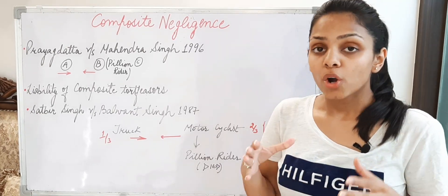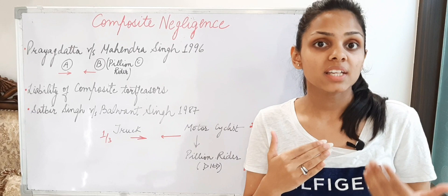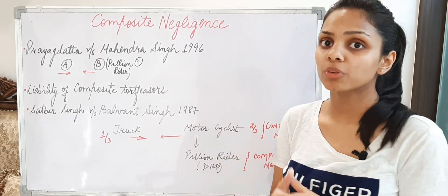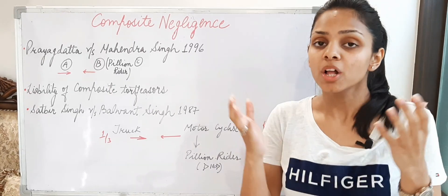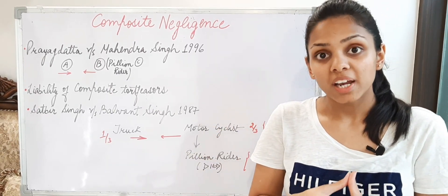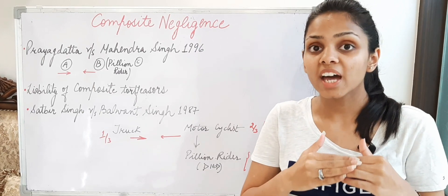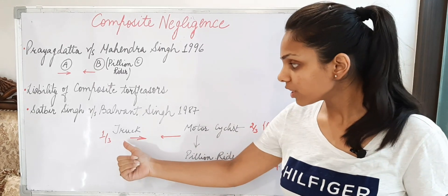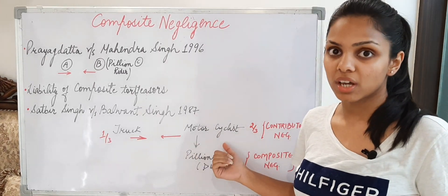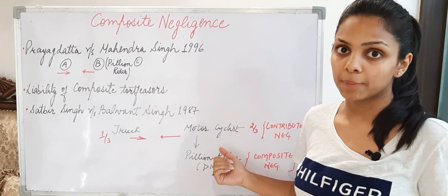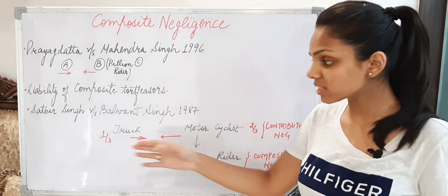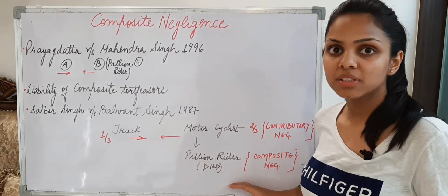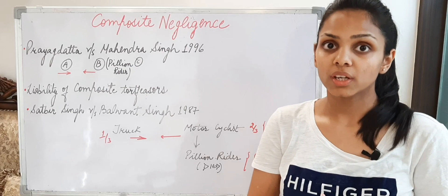Their negligence has co-joined to give birth to this injury — so for the pillion rider, this is composite negligence. But if I talk about the injury sustained by the motorcyclist, this is a case of contributory negligence. Why? Because in contributory negligence — if you have watched that video — contributory negligence occurs when there are two people's faults, and the plaintiff himself is also negligent — he has failed to take reasonable care of his own safety. So here the truck driver also had a negligent act, and the motorcyclist himself also had a negligent act. Due to his own negligence, he sustained injury. So for the motorcyclist — this is contributory negligence — and as far as the third person is concerned, this is composite negligence.